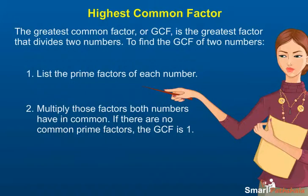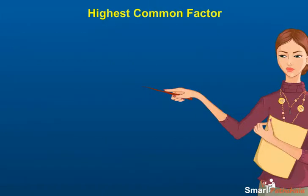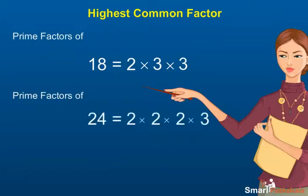the GCF is 1. Prime factors of 18 is equal to 2 into 3 into 3. Prime factors of 24 is equal to 2 into 2 into 2 into 3. There is one 2 and one 3 is common. The HCF is 2 into 3 is equal to 6.